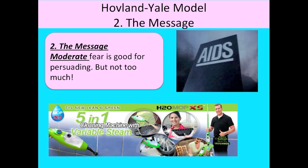The second part of the model is the message. Hovland-Yale identified that having moderate fear in a message is really good for persuasion, but not too much. There's a still from an AIDS advert from the 1980s — when that advert came out it was so frightening that everybody just freaked out. It was confusing, with gravestones slamming down saying 'Don't die of ignorance.' People were really confused and frightened by it. Hovland-Yale says that too much fear just turns people off — they literally switch off and don't take the message on board.